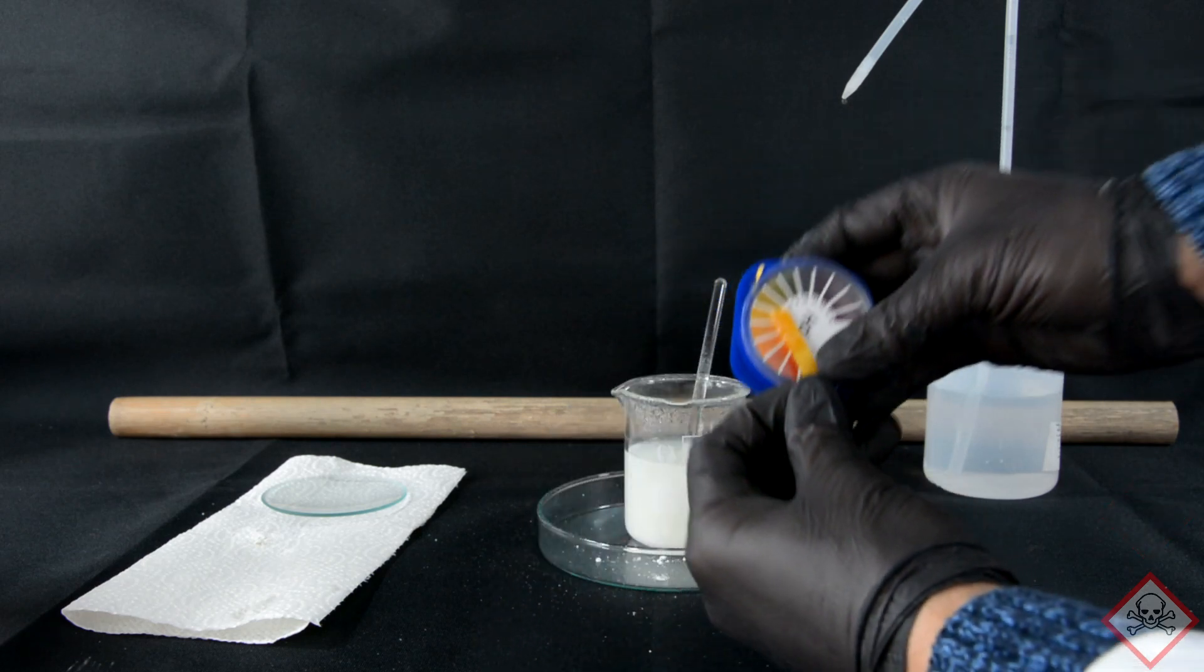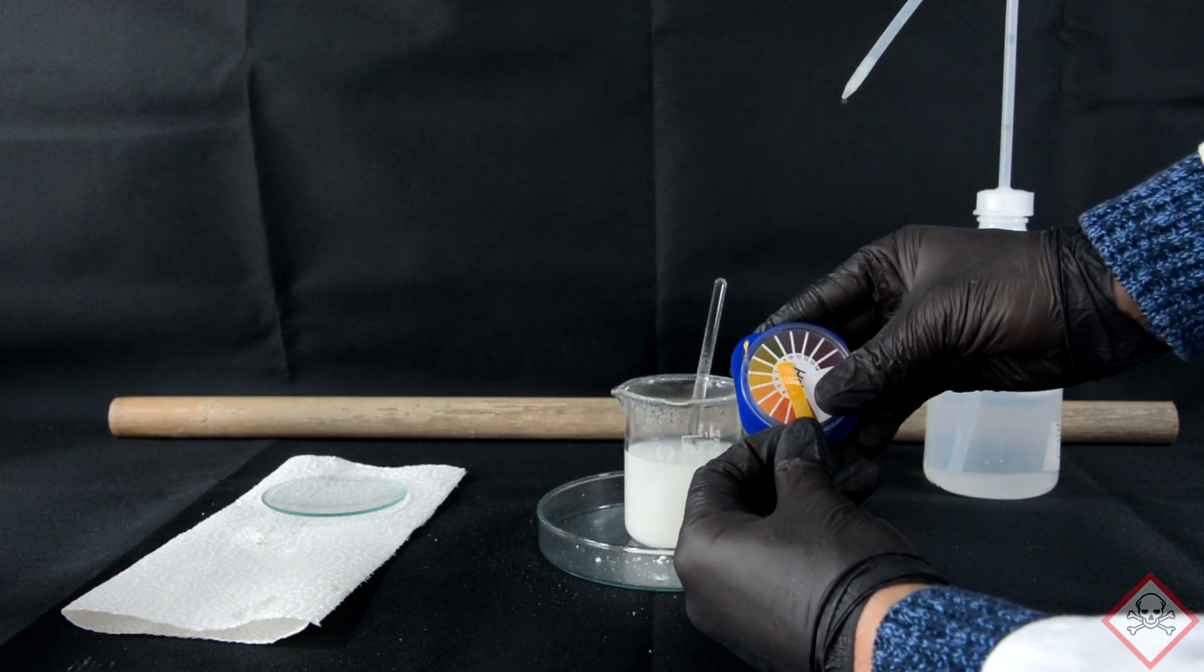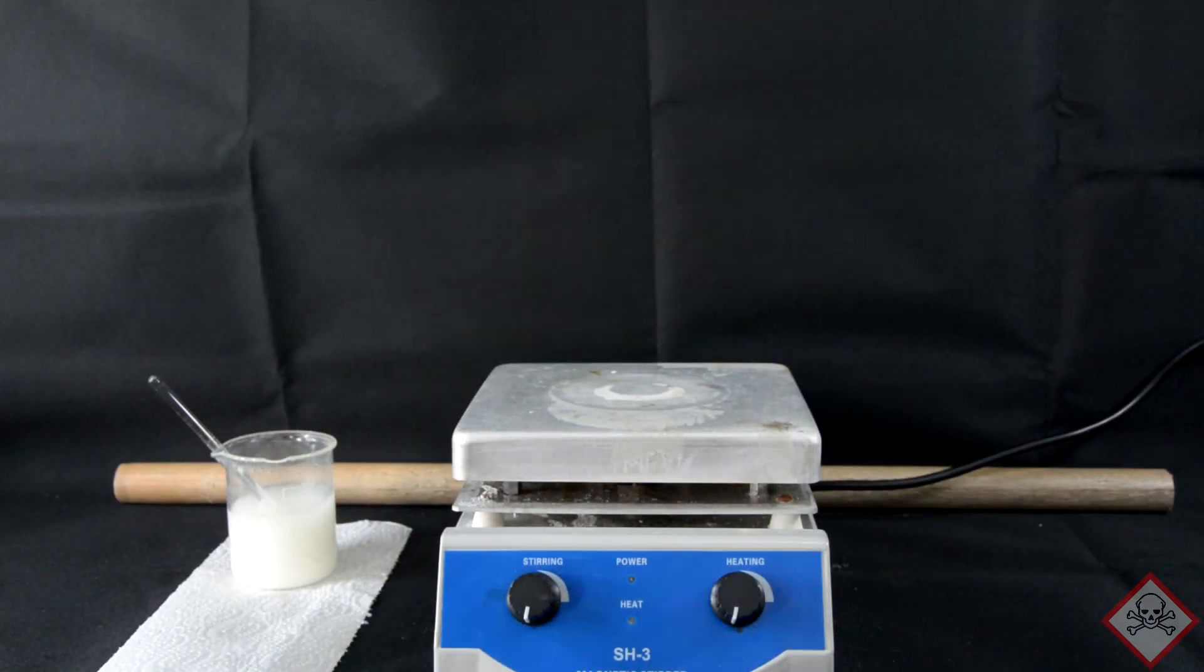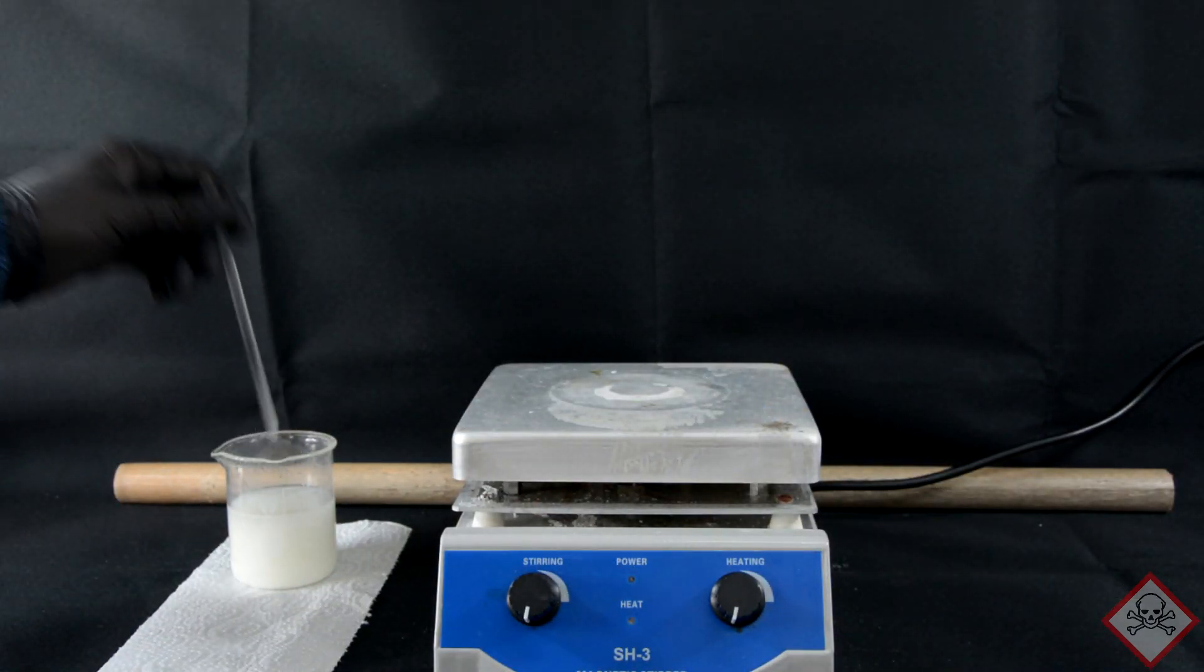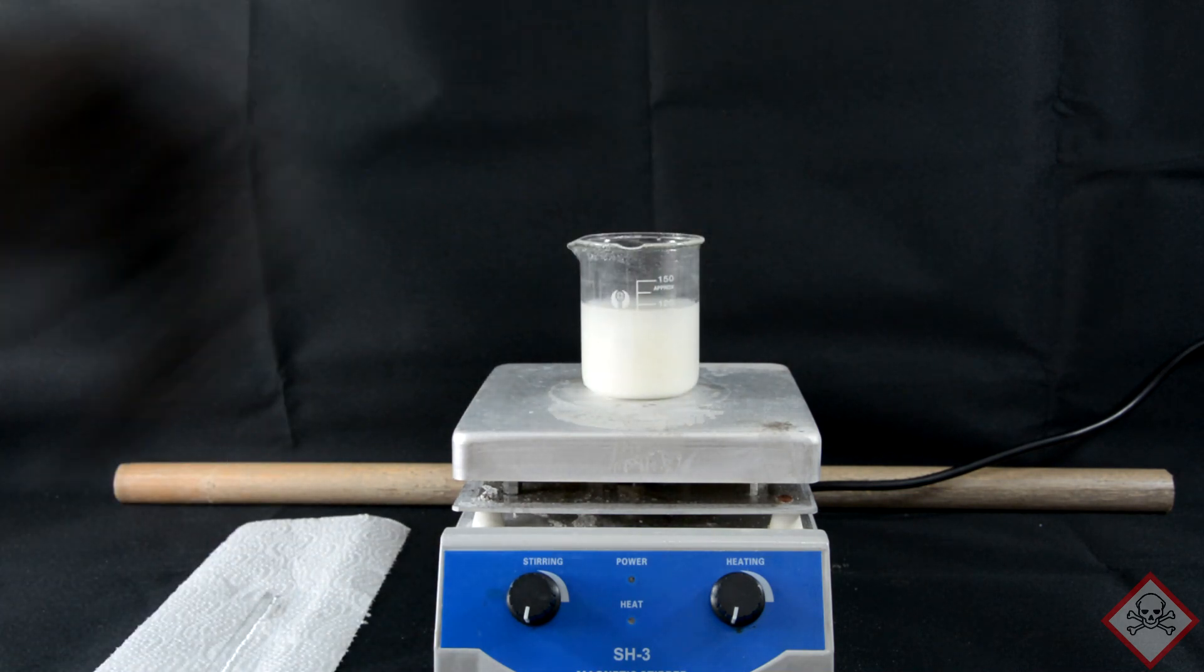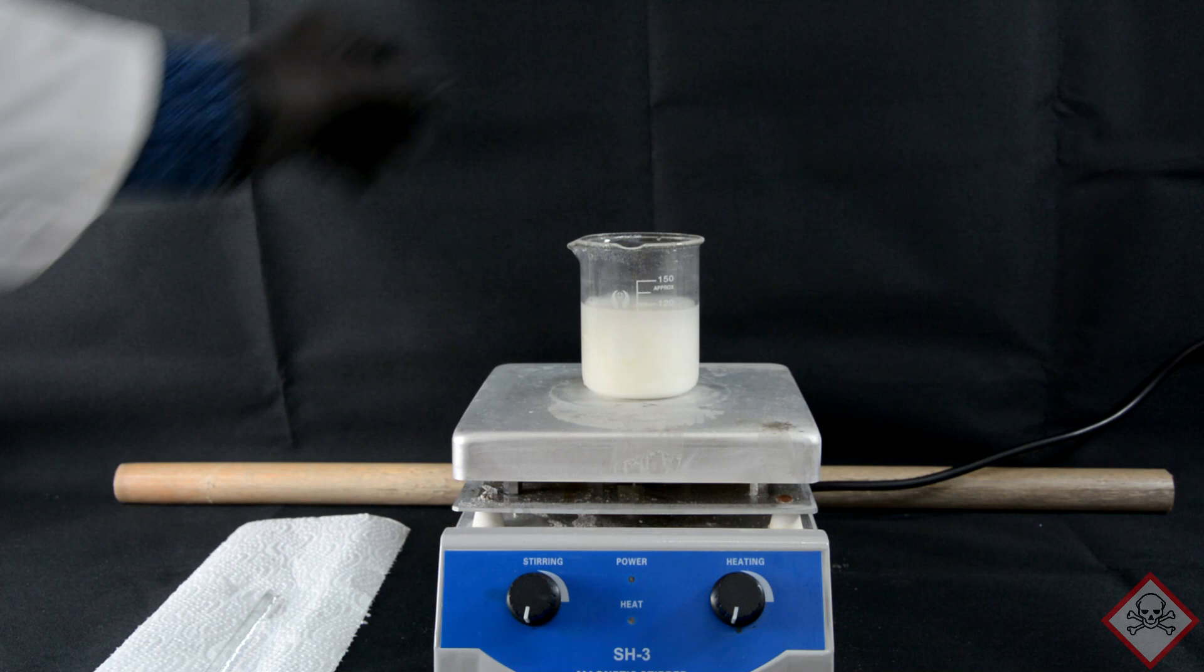When the pH of the solution is neutral, I stop adding barium carbonate. First, I thought about cleaning up the product by filtering and recrystallization. Another approach would be dropping the product out of solution with a fitting solvent.